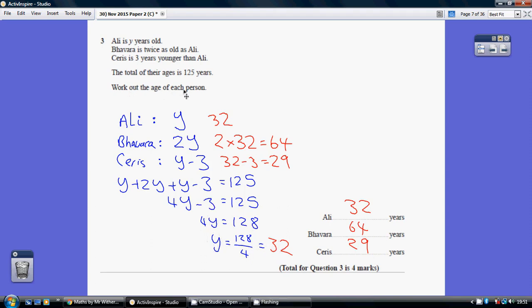Now, we're being asked to work out the age of each person. So, Ali, who is Y, well that is 32. Bavara is twice whatever Y is, so two lots of 32 is 64. And Karis is 3 less than Y, so 3 less than 32, which is 29. 32, 64, 29.